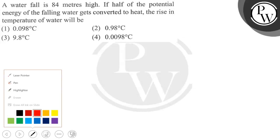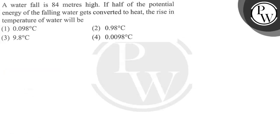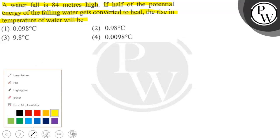Hello everyone. Let's read the question. The question says that a waterfall is 84 meters high. If half of the potential energy of the falling water gets converted to heat, the rise in temperature of water will be. Okay, so let's solve this.